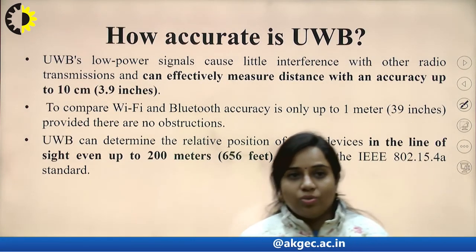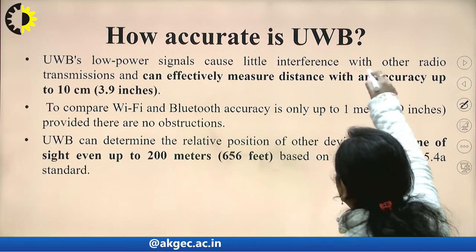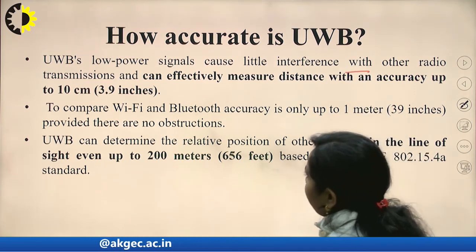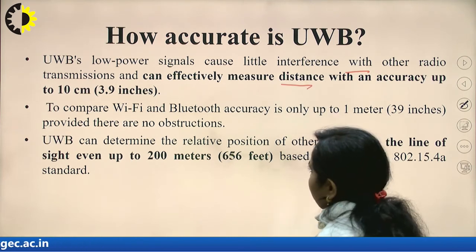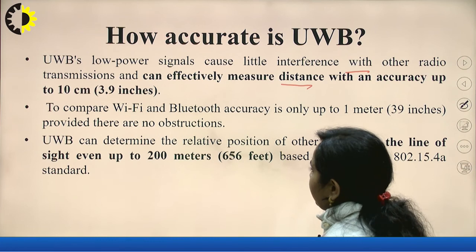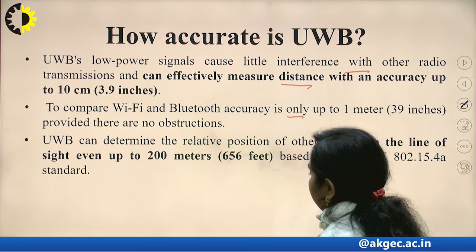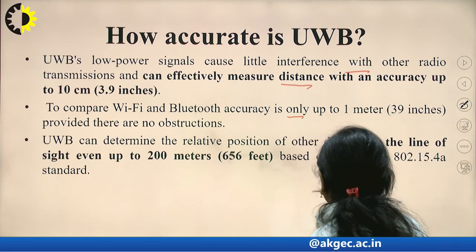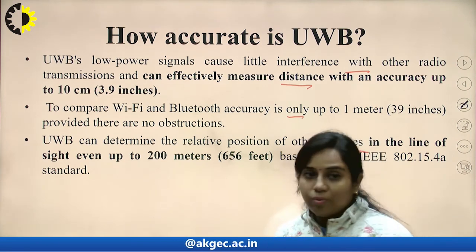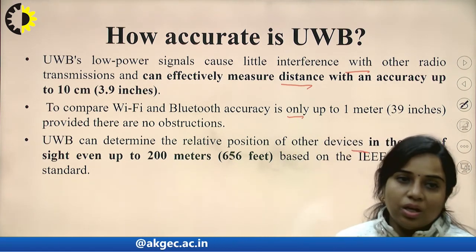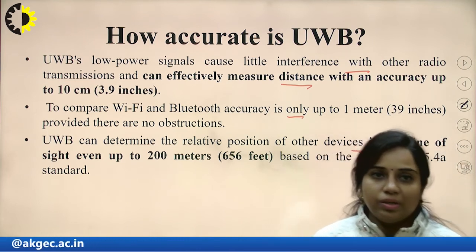How accurate is UWB? UWB's low-power signal causes little interference with other radio transmissions and can effectively measure distance with an accuracy of up to 10 centimeters. To compare, Wi-Fi and Bluetooth accuracy is only up to 1 meter. UWB can determine the relative position of other devices in the line of sight even up to 200 meters, and line of sight is always required for transmission.